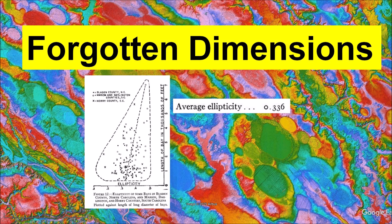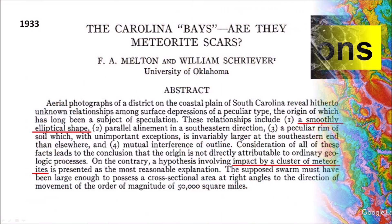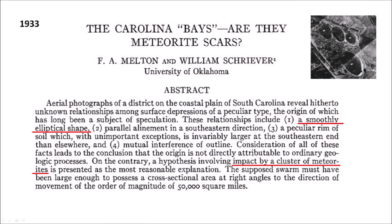and frictional cycles, which became known as the Aeolian, Lacustrine, and Thermokarst hypothesis. A paper published in 1933 by Professors Melton and Schreiber from the University of Oklahoma specifically pointed out the smoothly elliptical shape as an attribute of the Carolina Bays.